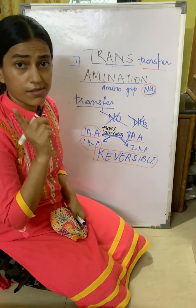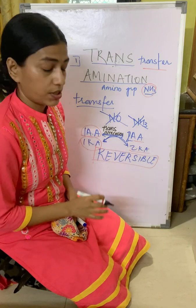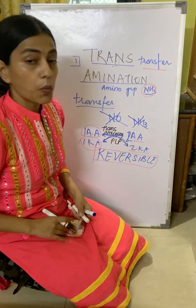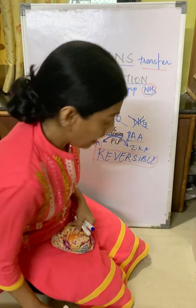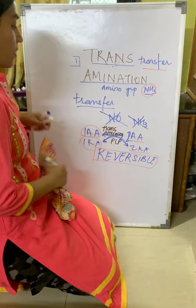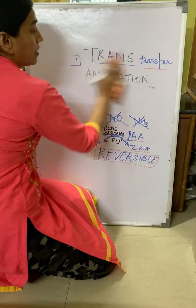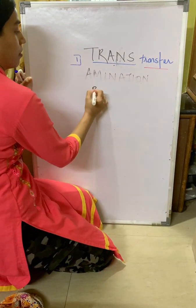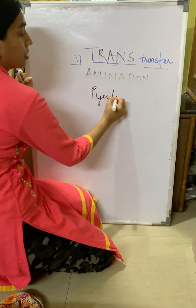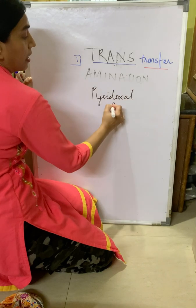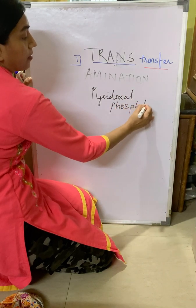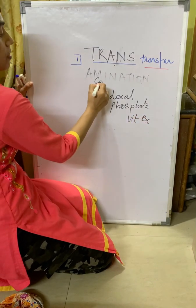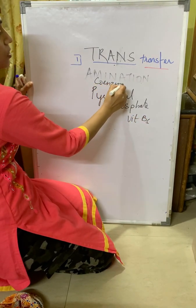There is a coenzyme in this reaction. The enzyme we know is transaminases. The coenzyme is PLP. PLP is pyridoxal phosphate. This pyridoxal phosphate is a vitamin B6. You have to remember that the coenzyme is pyridoxal phosphate.